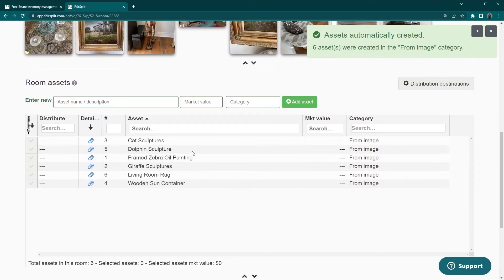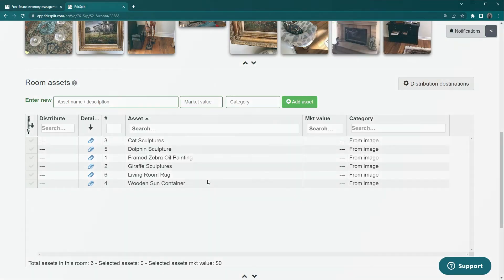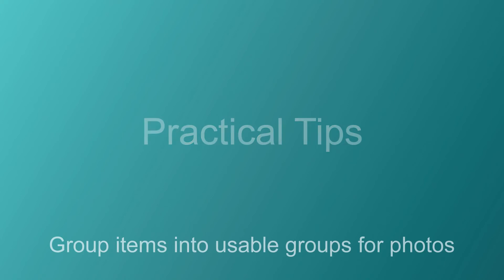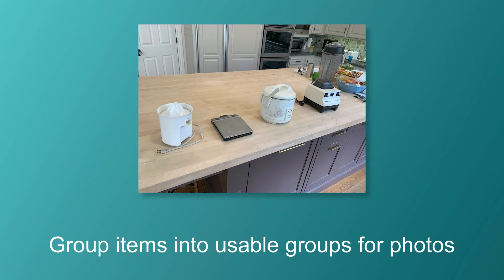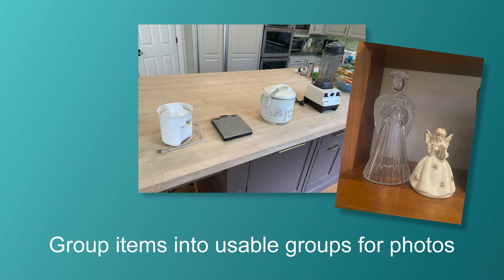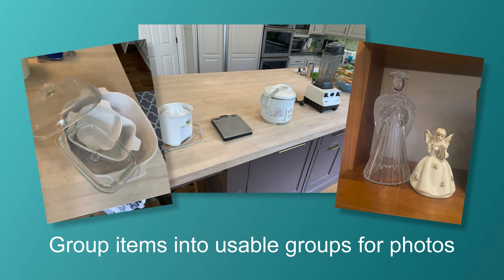Those were the basics. Feel free to rewind and make sure you're clear on those. Here are some other practical tips that will be helpful. Group items into usable groups for photos, like kitchen items, garage tools, figurines, and maybe little groups of two or three items or a half dozen items.